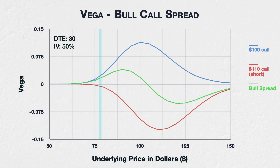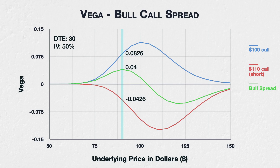Moving right to the $70–$95 area, both options are still out of the money, but are closer to the money and therefore have picked up some vega. The $100 strike is quite a bit closer, and so picks up more vega sooner. If we take the underlying price of $90 as an example, the long $100 call has a vega of 0.0826, and the short $110 call has a vega of minus 0.0426, which means the spread has a total vega of 0.04.